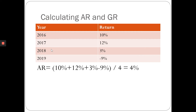So if someone asks what the return will be next year, you would say that on average you might likely get 4% on this stock. Now the geometric return answers something different — it tells how much you have actually earned annually over this particular period from 2016 to 2019.